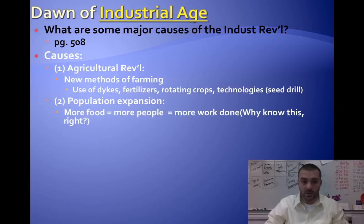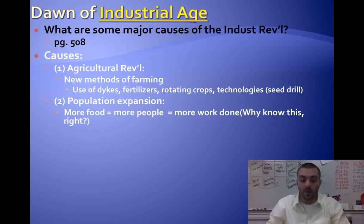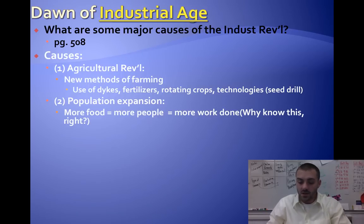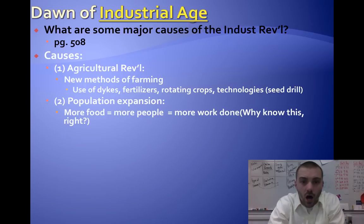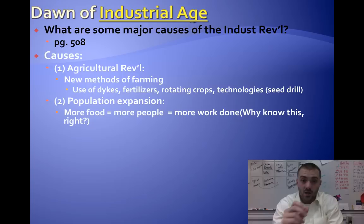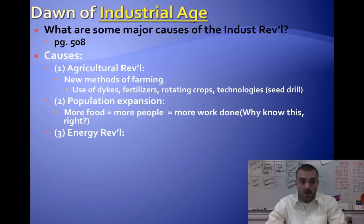As population begins to explode, we now have more food for more people and can get more work done. How does this help the Industrial Revolution? Can we get work done without people? No. So it was very important to have plenty of workers. Without workers, the Industrial Revolution would not have happened.